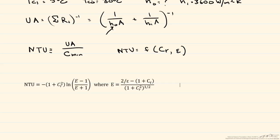Let's start with this C sub R, this heat capacity ratio. And this is equal to the heat capacity rate that's the minimum divided by the one that's the maximum, where this heat capacity rate is equal to the mass flow rate, times the heat capacity.